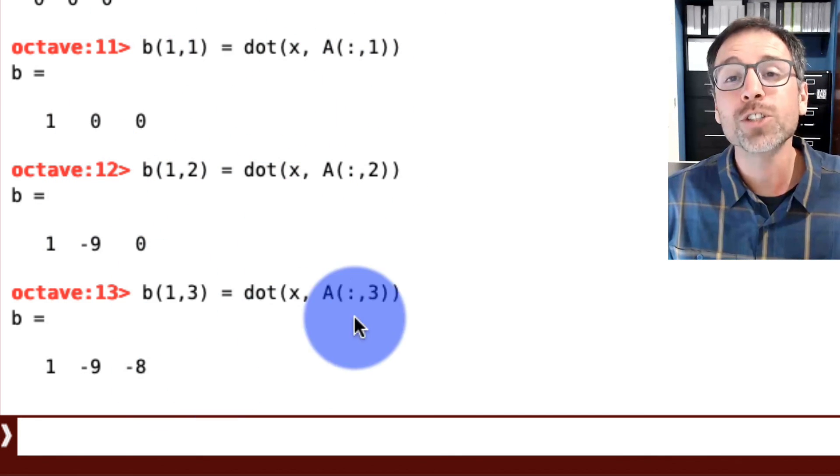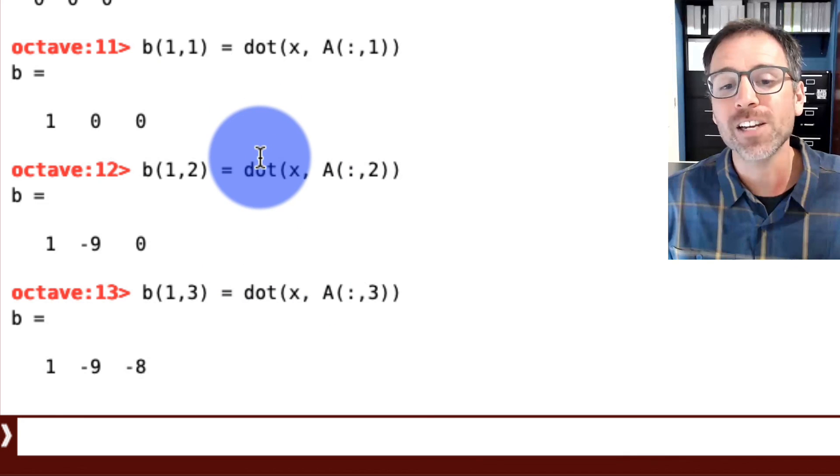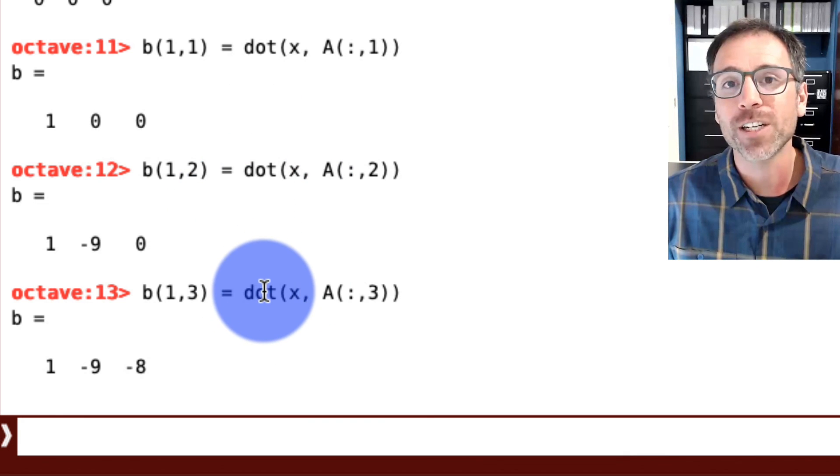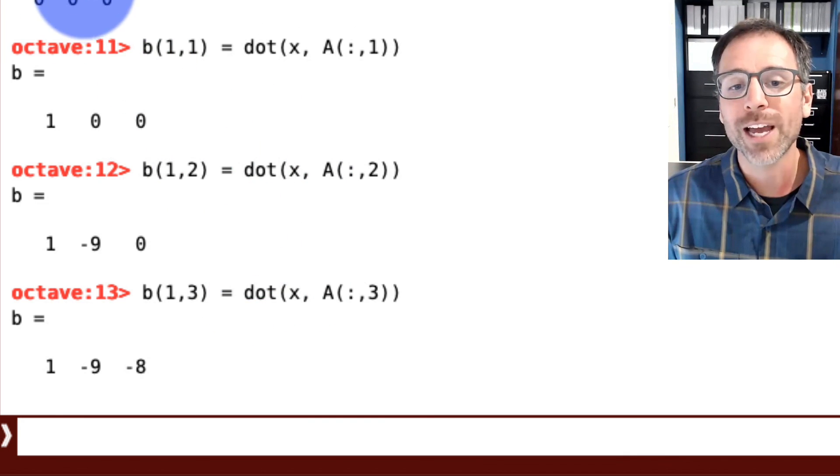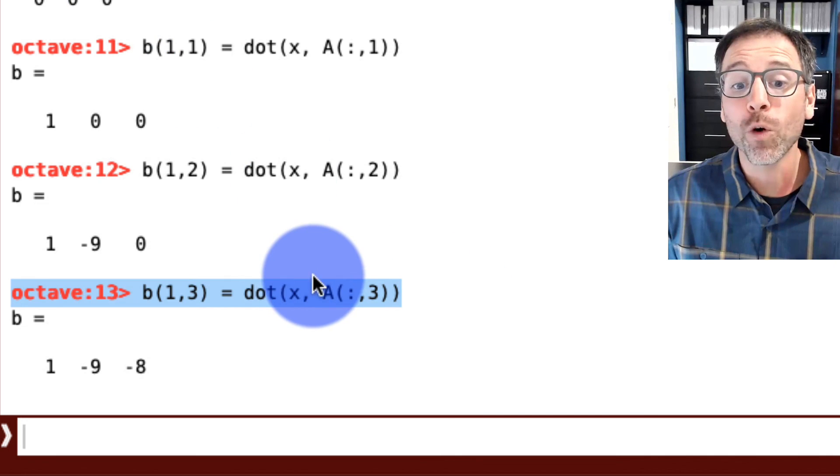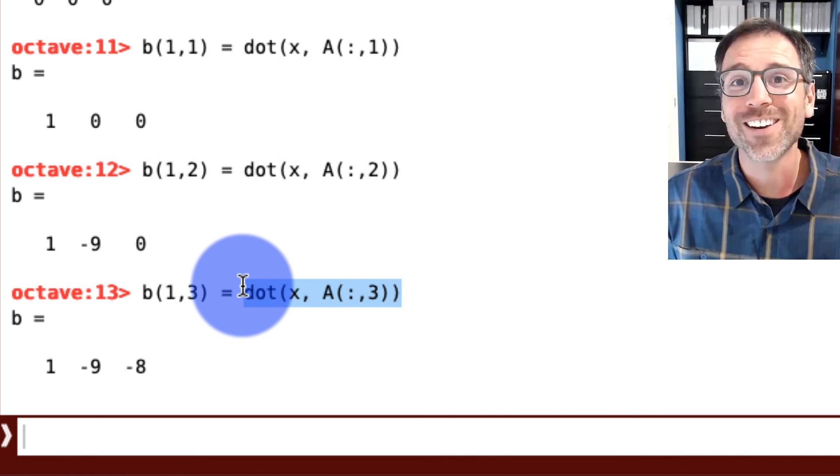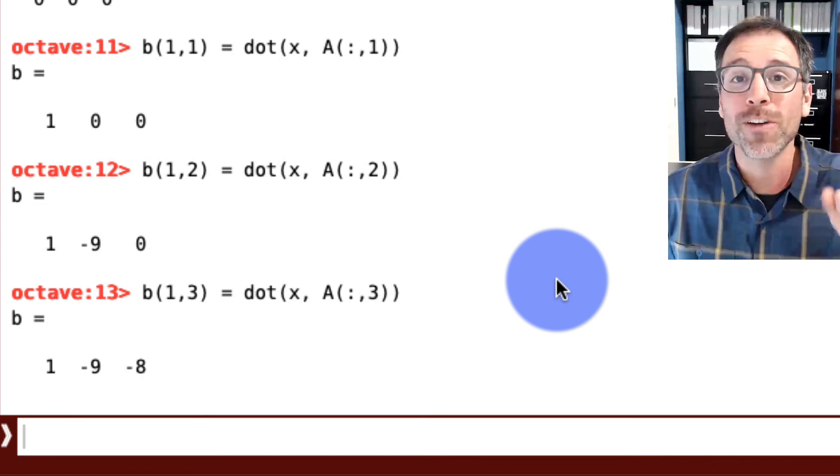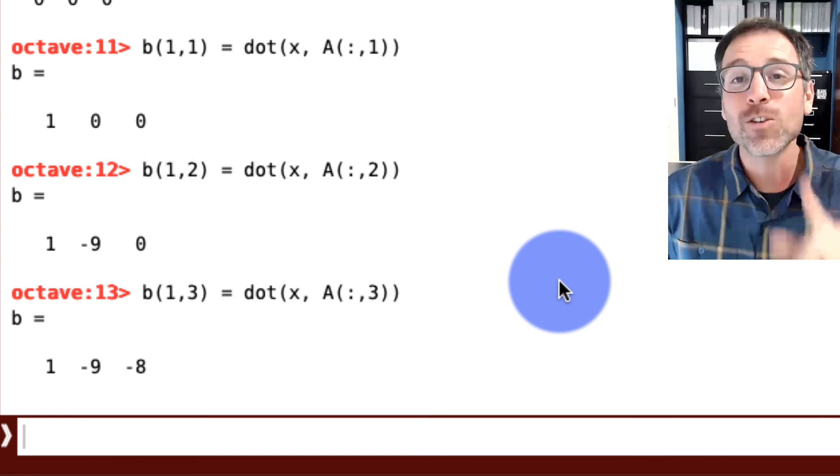For those watching at home, could you come up with a for loop implementation of this operation that runs through the individual entries of the output using a for loop to do what we've just done here? In my MATLAB class, we're going to go through a video that does exactly that. Thank you so much for your attention.